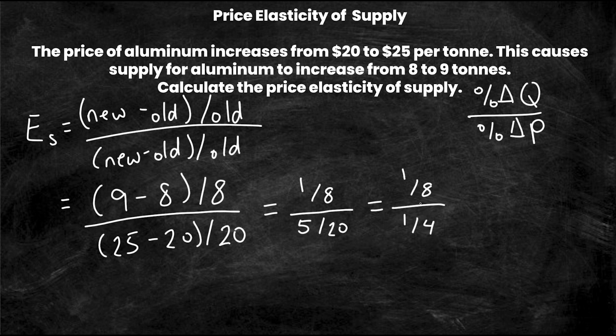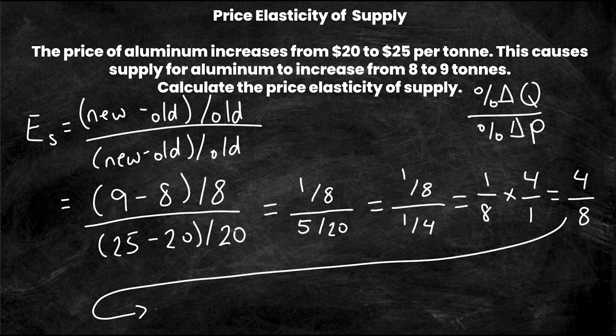Now remember when dividing fractions it's the same as multiplying by the reciprocal so let's do that. One eighth divided by one fourth is the same as one eighth times the reciprocal of one fourth which is 4 over 1. Well 1 times 4 equals 4, 8 times 1 equals 8, and so our answer is four eighths which obviously we can simplify to 0.5 or one half equals the elasticity of supply.